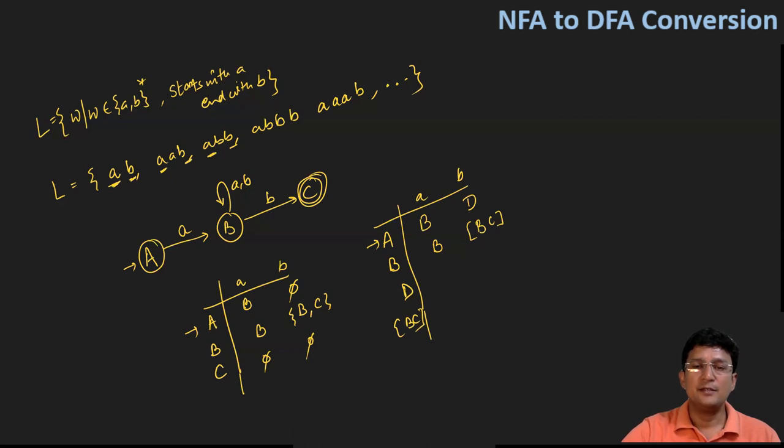First with the dead state: I've already told you that if a dead state is there, the transition from any symbol will remain at the dead state only. Now BC on small a: you see the NFA table, B on small a goes to B and C on small a is undefined. So if you take the union of these two, that will be B.